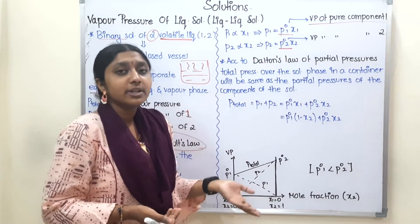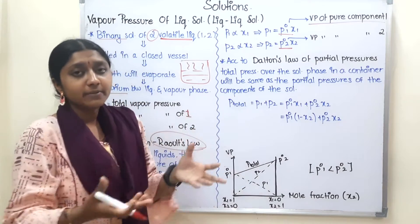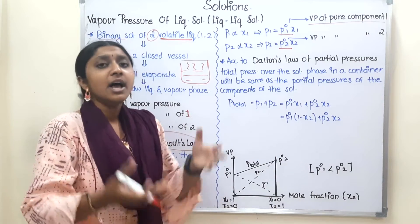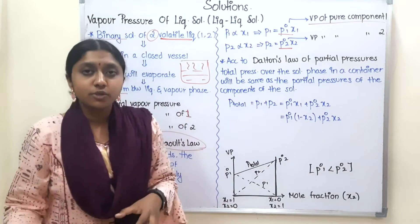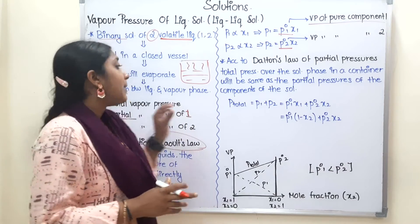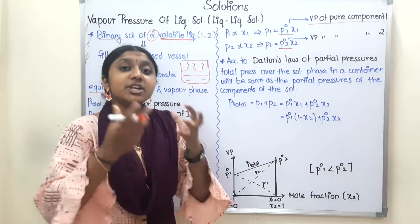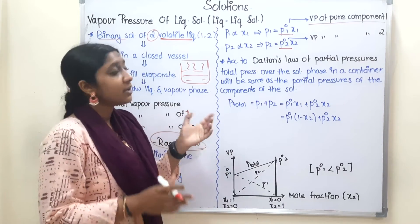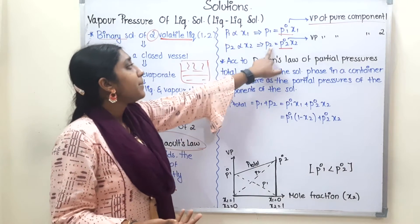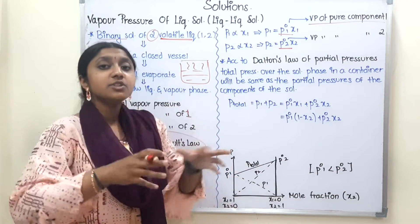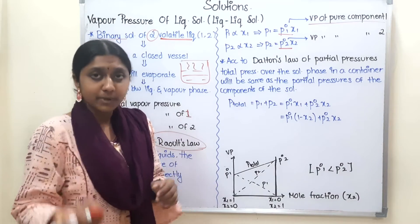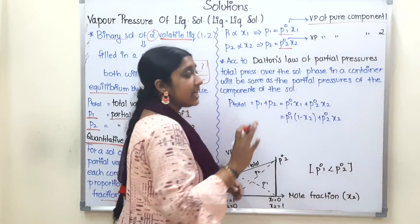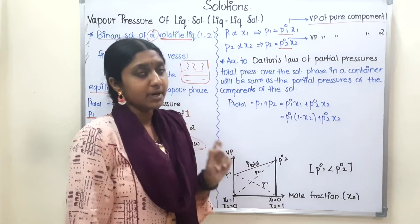For the second component, the constant is P02. So P1 = P01 · X1 and P2 = P02 · X2. These are the partial vapor pressures of the first and second components respectively. P1 and P2 refer to the partial vapor pressures in the gaseous mixed phase above the solution, while P01 and P02 are the vapor pressures of the pure components.